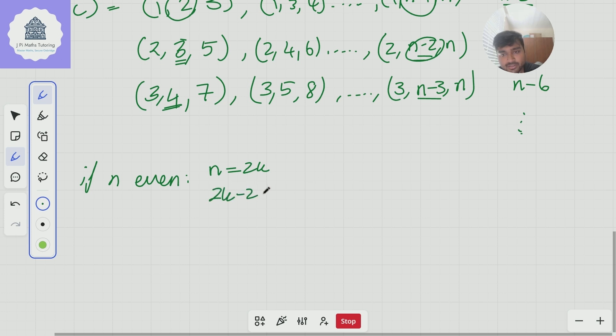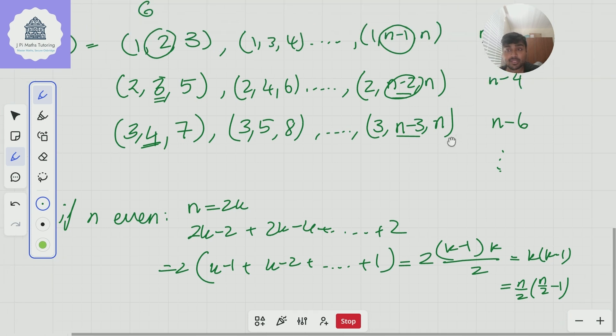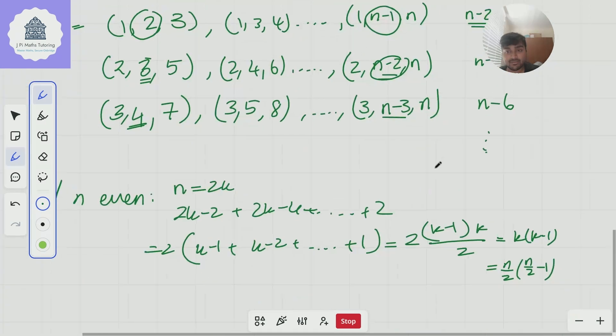So we've got two k minus two plus two k minus four and so on down to two and if we factor out a two then that's just k minus one plus k minus two plus so on down to one. And this is a formula we should be happy with this is k minus one times k all over two so that would just be k times k minus one and if maybe if we want to put that back in terms of n that's n over two times n over two minus one like so. Okay so that would be the expression when n is even what if n is odd?